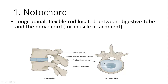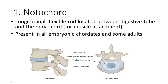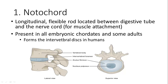The notochord is a longitudinal flexible rod located between the digestive tube and the nerve cord, used for muscle attachment. It's present in all embryonic chordates and in some adults. In humans it mostly forms the intervertebral discs, which are made of cartilage and allow you to bend your back from side to side and lean forward without bending at the hip.